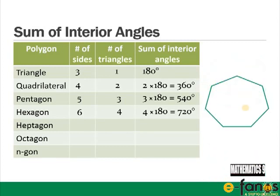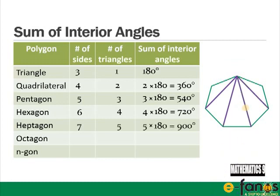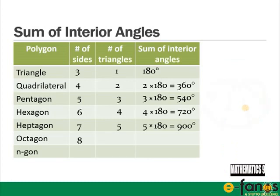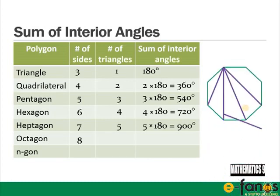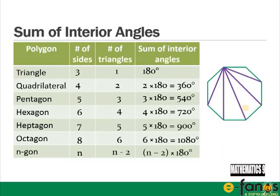A heptagon has seven sides, made up of five triangles, and the sum of interior angles is 900 degrees. An octagon has eight sides, made up of six triangles, and the sum of interior angles is 1080 degrees. An n-gon has n sides, n minus two triangles, and the sum of interior angles is (n − 2) × 180.